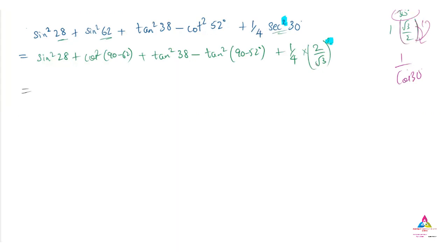So sine square 28 degree plus cos square 28 degree, plus tan square 38 degree and here minus tan square 38 degree.